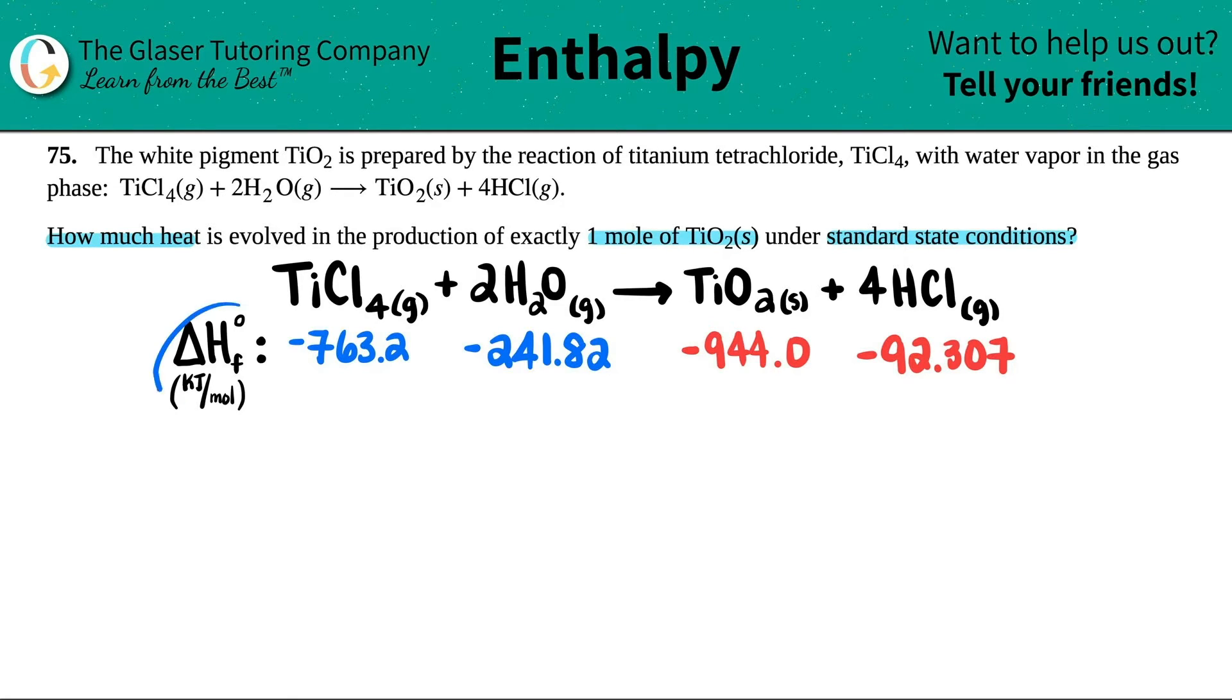So what I did was I went to the back of the textbook to find out what the delta H values were. And I picked delta H because that's the heat letter. If you search these numbers, you're probably going to see a chart with three different values. We only care about delta H. We don't care about G or S, but that's coming. In this case, we only care about delta H.